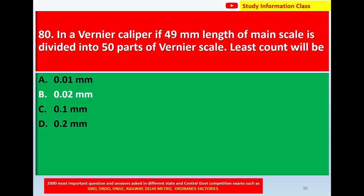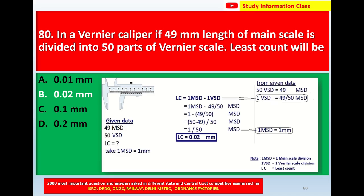Correct answer is option B, 0.02 mm. Write the given data: 49 MST (main scale divisions) is divided into 50 parts of Vernier scale, so 50 VST = 49 MST. We need to find the least count, which is one MST minus one VST. Assume one MST equals one millimeter.